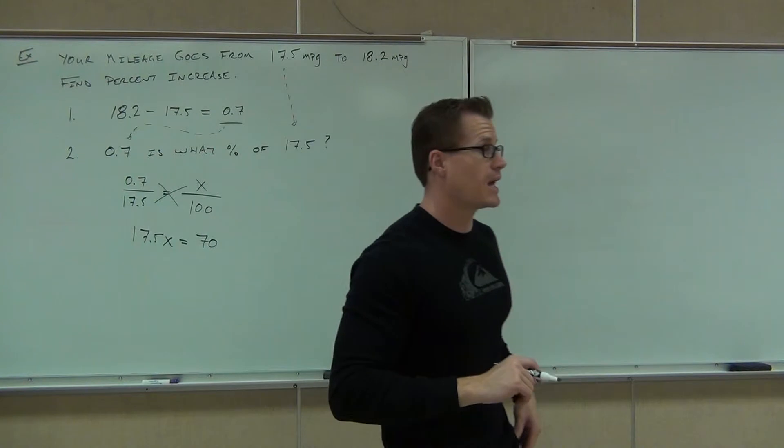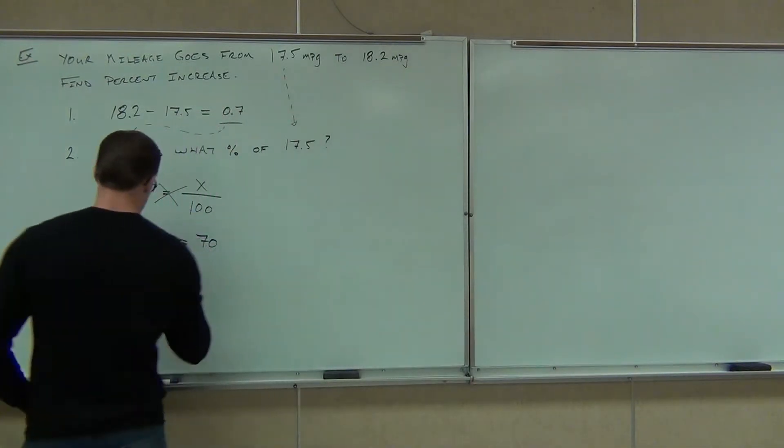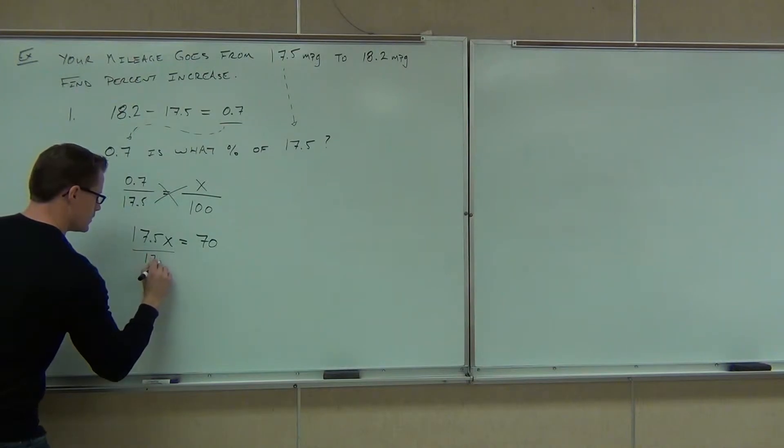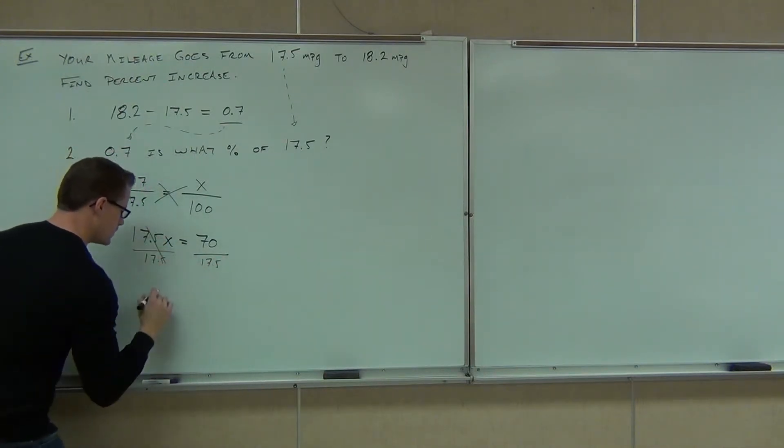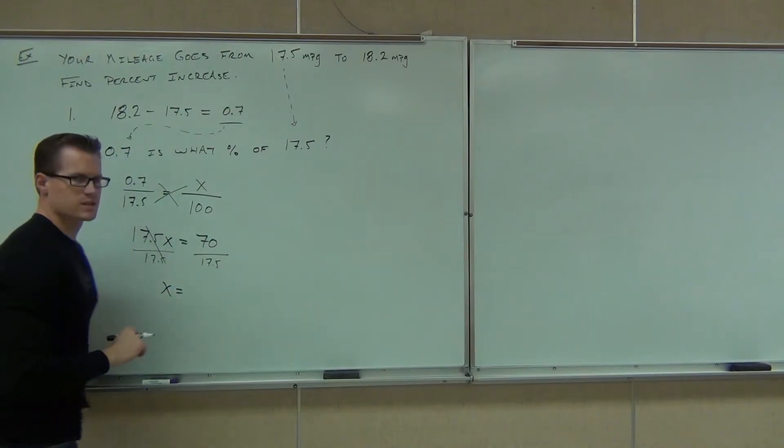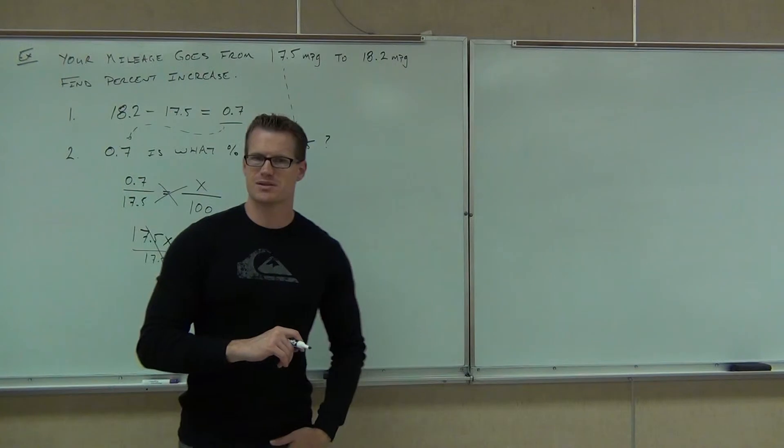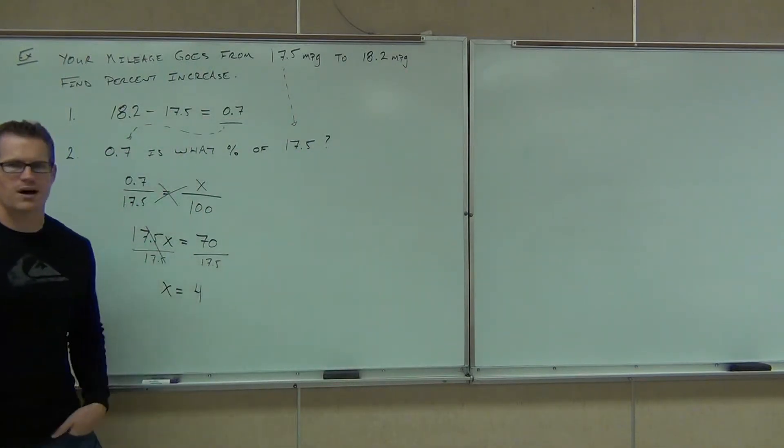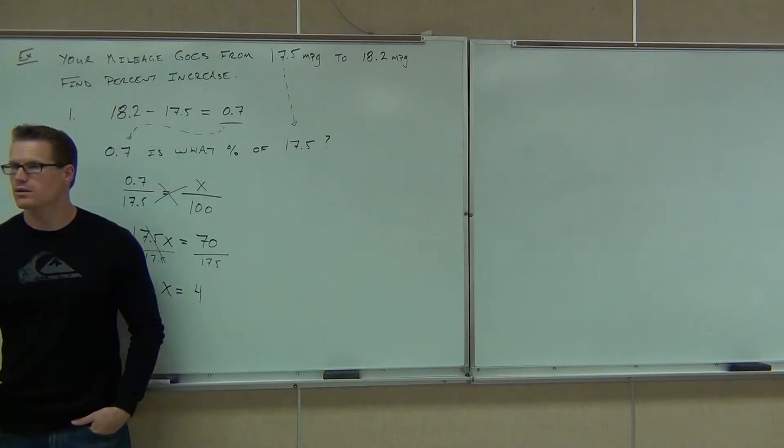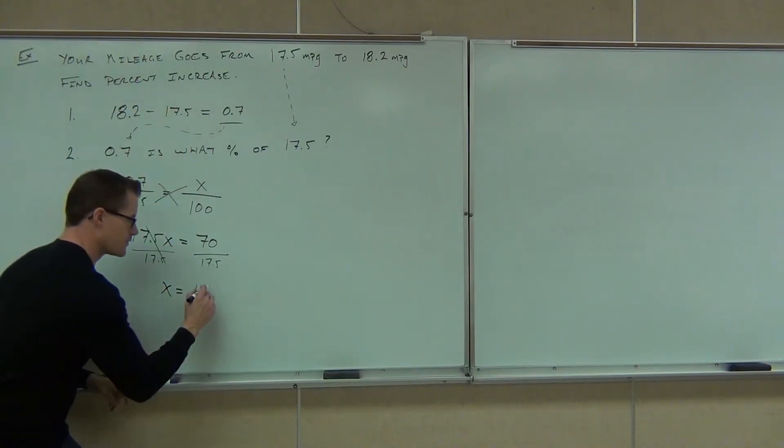17.5x equals 70 and can you also tell me how you get rid of the 17.5? Divide. X. What's 70 divided by? Four. Wait, four even? Oh, that's kind of nice. I gave you nice numbers, didn't I? Four what? Four miles per gallon? Four dollars? Four percent. You're trying to find percent increase, so that's definitely a percent.